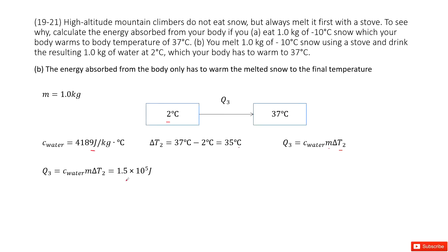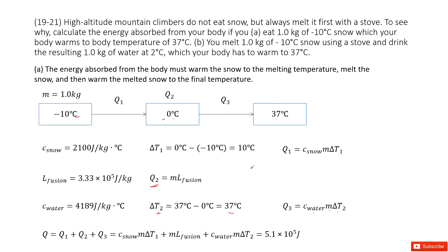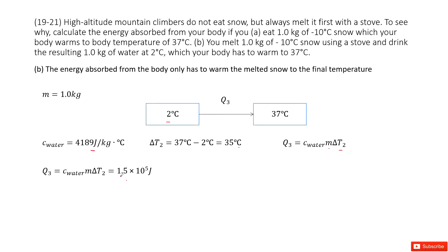Just the water transfers from 2 degrees Celsius to 37 degrees Celsius. Now we can compare these two values. One is 5.1 times 10 to the power 5, the next one is 1.5 times 10 to the power 5. You can see the first case is about 3.4 times larger than the second case.